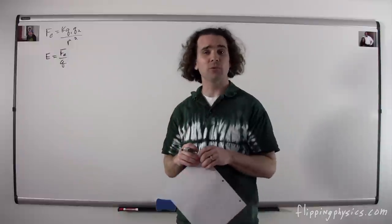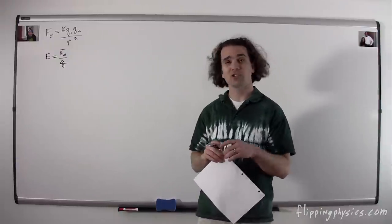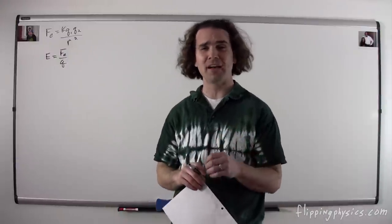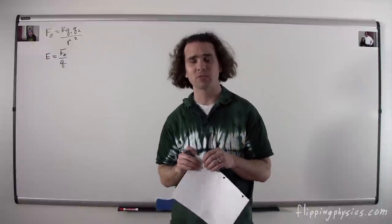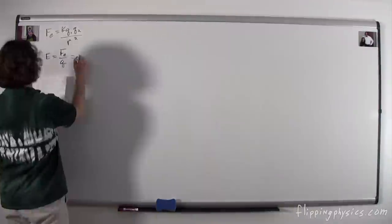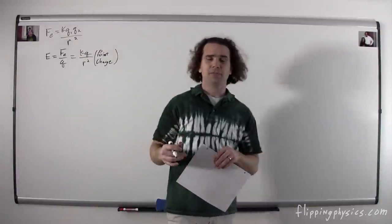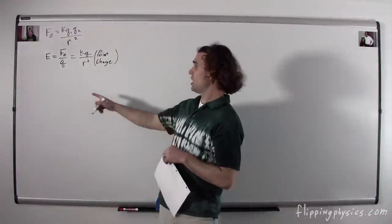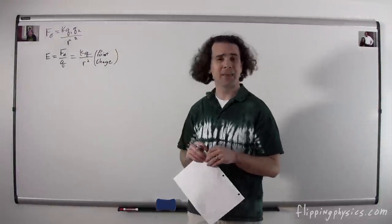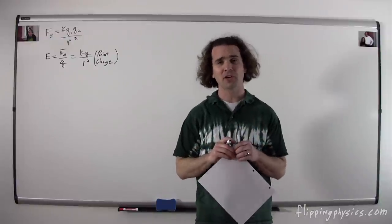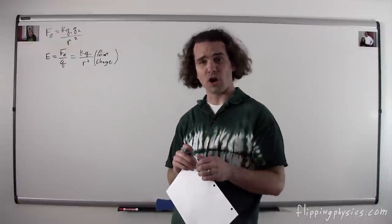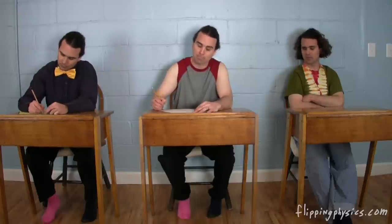The electric field is equal to the electric force per unit charge. That's a test charge, and the electric field is defined by a small positive test charge. If you plug in the equation for Coulomb's law, one of the charges ends up canceling out, and the electric field for a point charge is E = kq/r². He posts all of his lecture notes at FlippingPhysics.com.